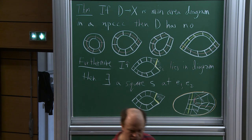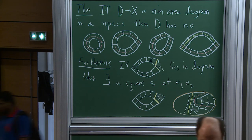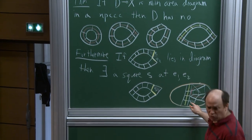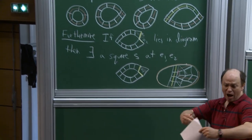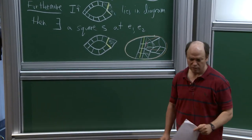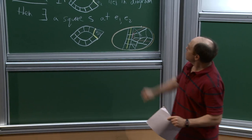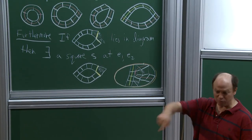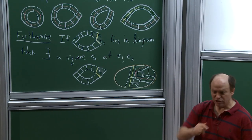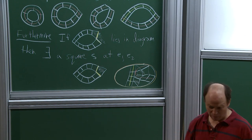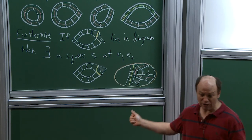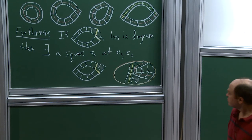When you say minimal, do you mean its image in the cube complex? No — the diagram D itself. We're looking at how big D is itself. When we say a diagram in X, we mean a disk diagram in the plane together with a combinatorial map from that disk diagram to the two-skeleton of X.